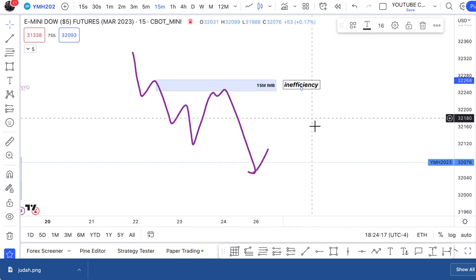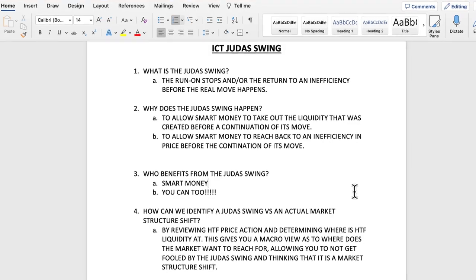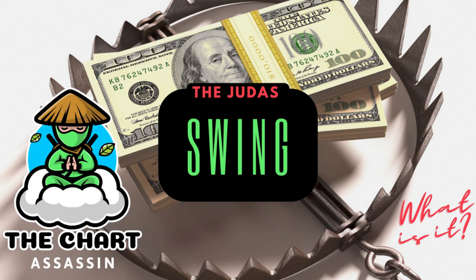In order to understand the Judas Swing, you need to understand why it happens. It happens to allow smart money to take out the liquidity that was created before a continuation move occurs. It also allows smart money to reach back to an inefficiency in price before the continuation of that move. Smart money benefits from the Judas Swing because they are able to take out liquidity and get into a better position for that continuation to occur.